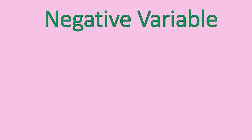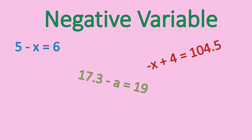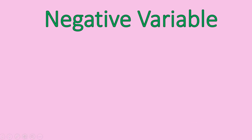Let's look at some equations that have negative variables to start off with. 17.3 minus a equals 19. Negative x plus 4 equals 104.5. 5 minus x equals 6. 7 minus n equals 13. Negative b plus 12 equals 13. These are examples of equations that have negative variables.